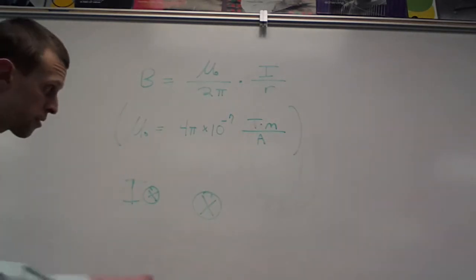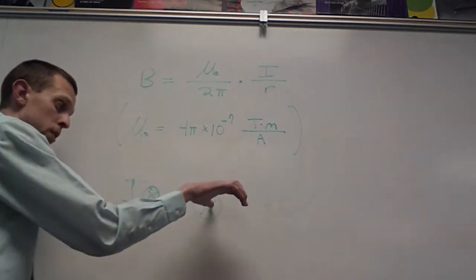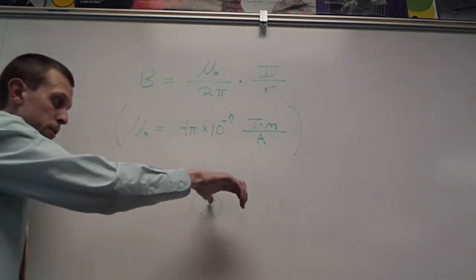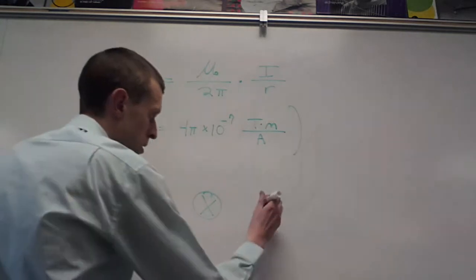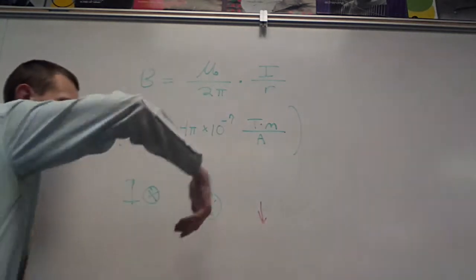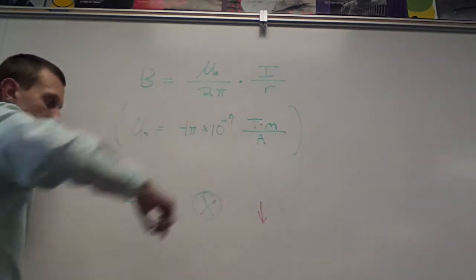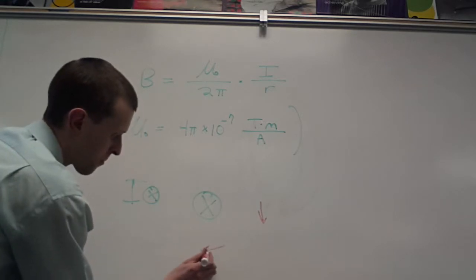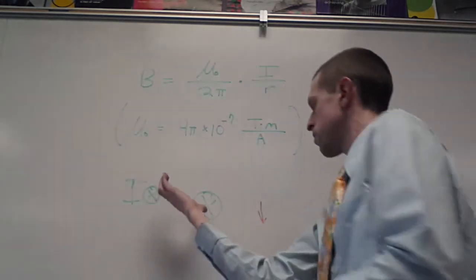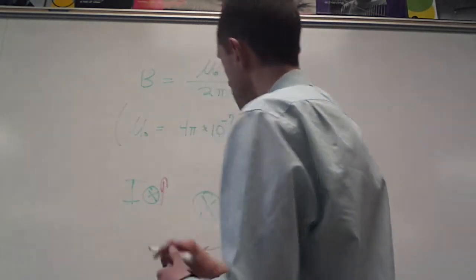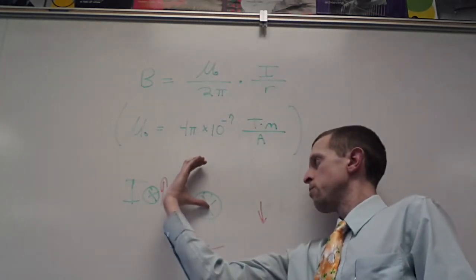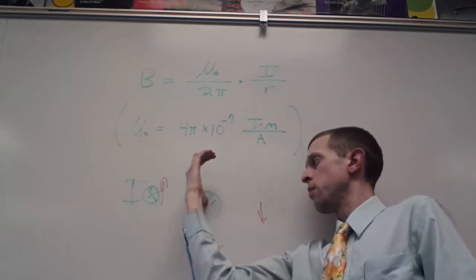So our current is going like this. The magnetic field, see I need to put my thumb into the board here. The magnetic field to the right side is going to be pointing downward. Below it is going to be pointing to the left. To the left side is going to be pointing upward. And above is going to be pointing to the right.